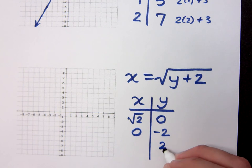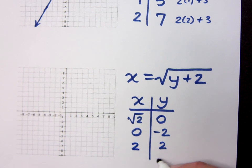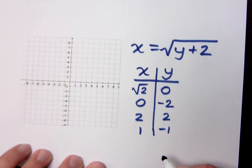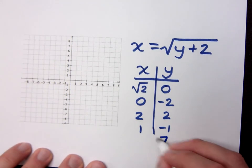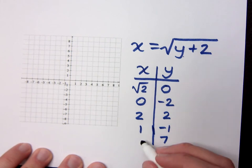You said 2. 2 plus 2 is 4. The square root of 4 is 2. How about negative 1? I heard you say, what did you say, 7? 7. I'll plug in 7 plus 2 is 9. The square root of 9 is 3.